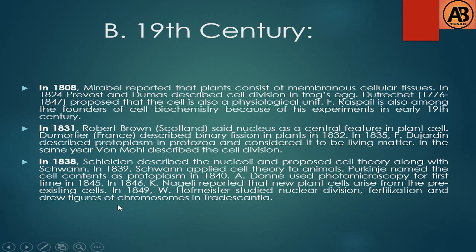In the 19th century: in 1880, Mirbel reported that plants consist of membranous cellular tissues. In 1831, Robert Brown identified the nucleus as a central feature in plant cells. In 1838, Schleiden described the nucleolus and proposed cell theory, along with Schwann. In 1839, Schwann applied cell theory to animals.